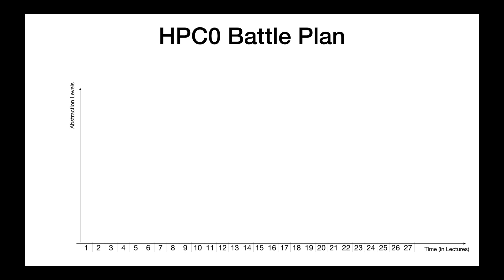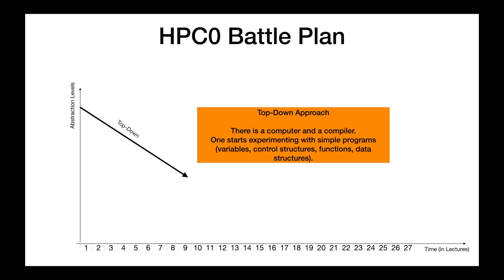But back to HPC Zero. Even though we're working with a simple hardware architecture and compiler, it's still an ambitious goal for just one semester. So how can we achieve it? Well, there are different approaches. One way is to go from the top down, similar to how natural sciences work. In our case, the nature we want to explore is an existing computer and compiler.